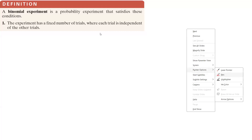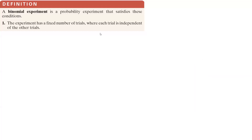What is a binomial experiment? So far we talked about different types of variables — continuous random variables and discrete random variables. For a discrete random variable, we went over probability and how to calculate it. Now, for a discrete random variable, we might have a special case called a binomial experiment.